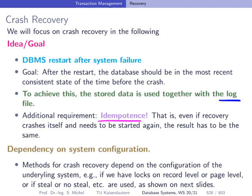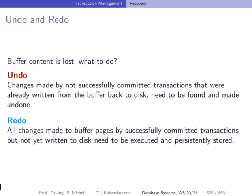Different aspects of crash recovery depend on the system configuration, as we will see in a few slides. There are two parts to crash recovery: undo and redo. If the buffer content has been lost, we have to make sure that changes made to the buffer — which are not yet on disk but were done by successful transactions — are materialized on disk. We call this redo. On the other hand, if changes were propagated from the buffer back to disk but were done by transactions that did not successfully commit, those changes have to be found and undone.